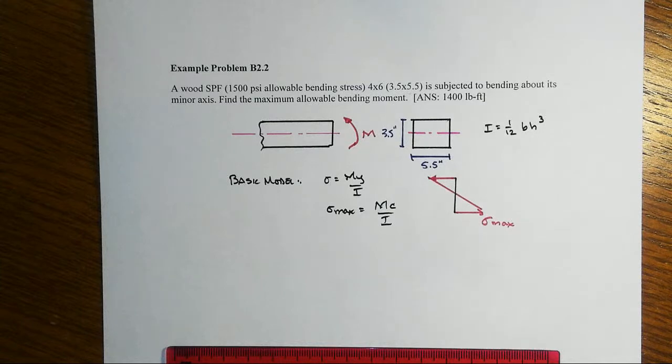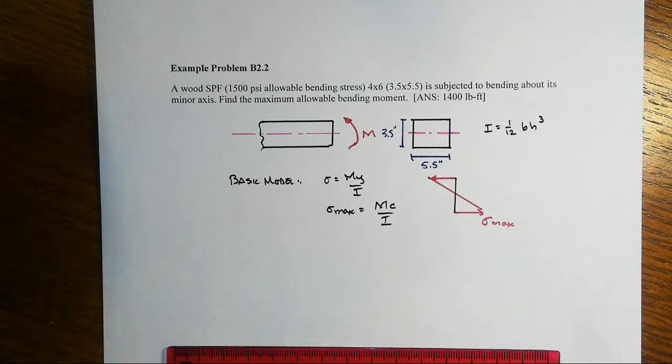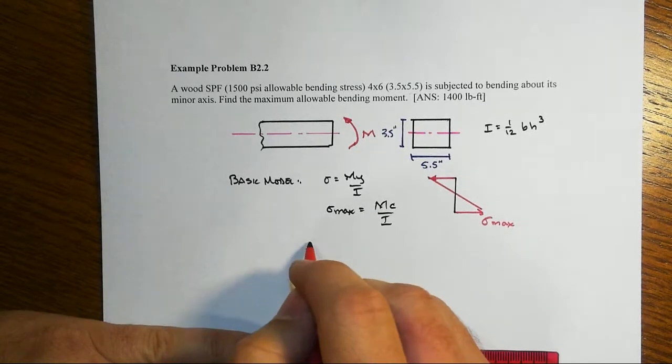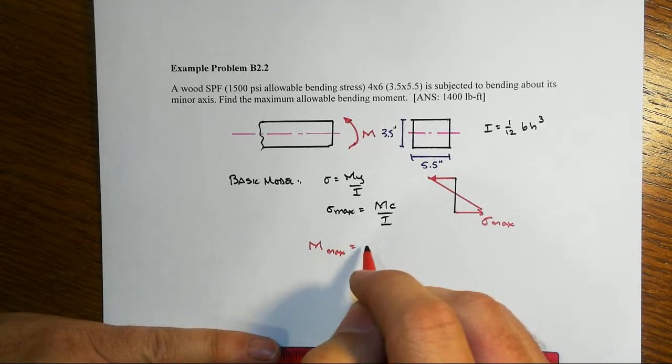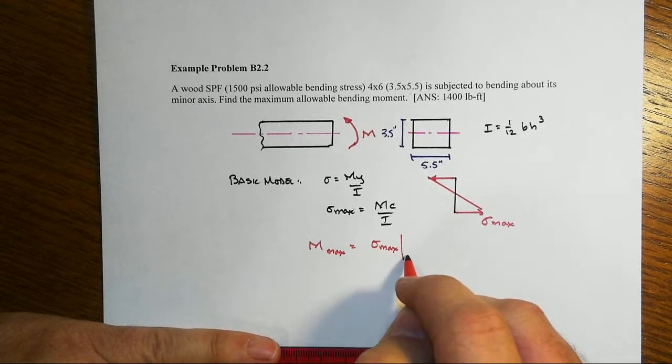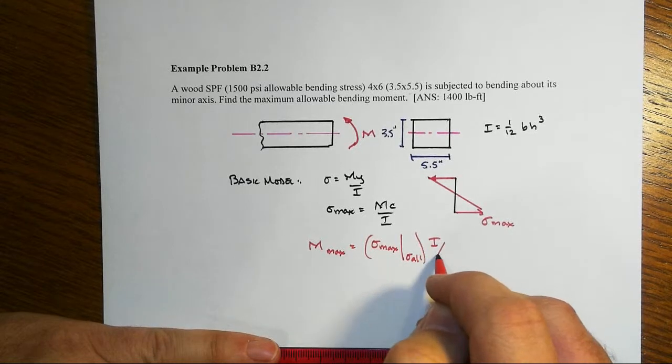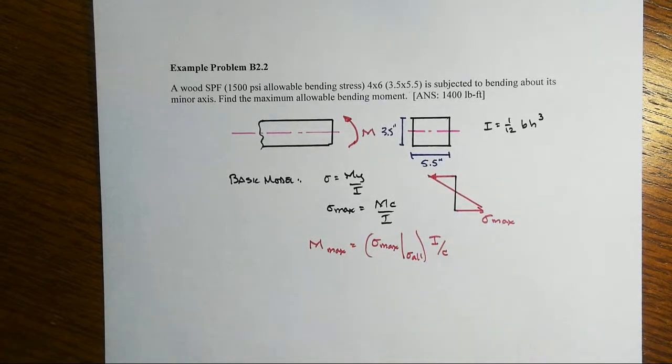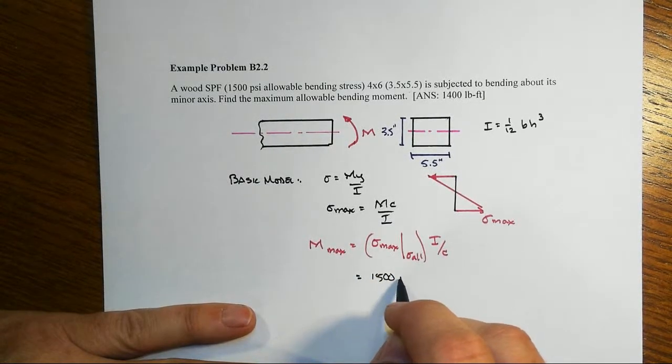We have a doubly symmetric cross-section, so we can proceed forward in a pretty straightforward fashion. We're looking for what's the maximum moment we can use when the max stress is set equal to this allowable stress, times I over c.